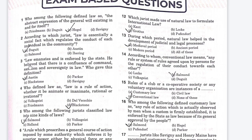The next question: law emanates and is enforced by the state. He believed that there is a confluence of command, sanction, and sovereignty in law. Who gave this definition? Option A is Austin, Option B is Parker, Option C is Blackstone, Option D is Savigny. The right answer is Option A, Austin.